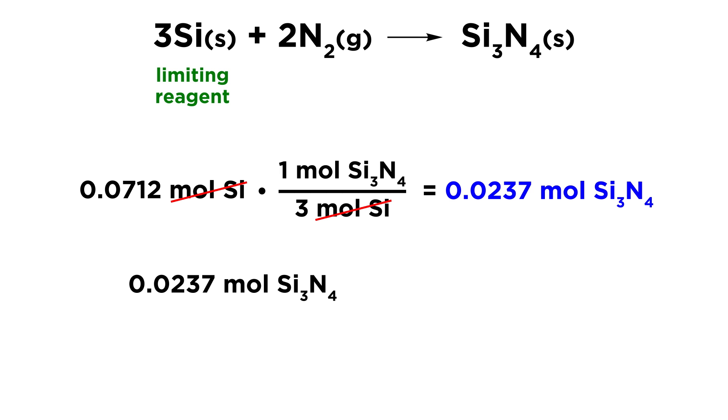and now we just want to convert that into grams so that we have a value in grams. So in order to do that, we need the molar mass of Si₃N₄. And if we tally up three silicon atoms and four nitrogen atoms, that adds up to 140.28 grams. So we need to multiply our value in moles by that many grams over one mole, and that way moles will cancel, and we will get a value in grams. And to three sig figs, that is going to be 3.32 grams. So that is our theoretical yield for this reaction.